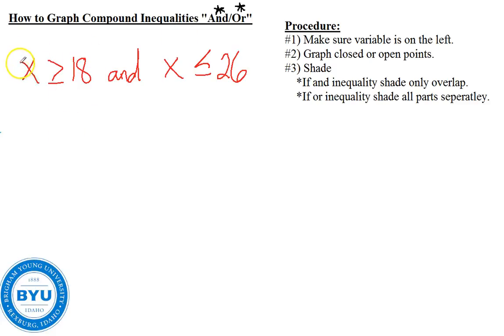So here's one. This represents the age that males can serve a mission in the Church of Jesus Christ of Latter-day Saints. They can leave when they're greater than or equal to 18, but it has to be less than or equal to 26. This is an and inequality. Both of these must be true.